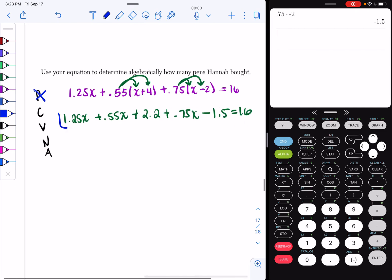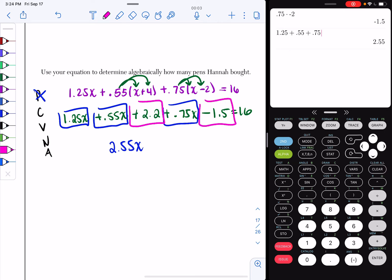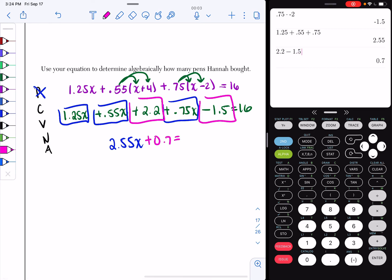So I'm going to combine my 1.25X, my 0.55X, my 0.75X. So 1.25 plus 0.55 plus 0.55 is 2.55. So I have 2.55X. Now I'm going to combine 2.2 and my minus 1.5. And that gives me 0.7. So I have plus 0.7 equals 16.